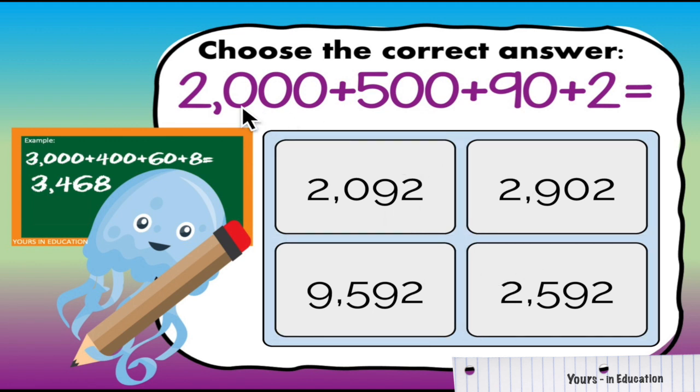On this type of question you need to find out if 2,000 plus 500 plus 90 plus 2 is equal to which one of these numbers and you choose the answer that you know is correct.